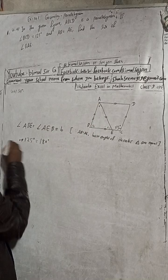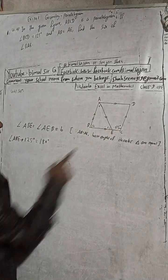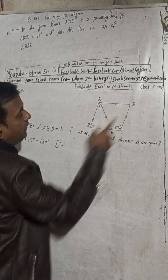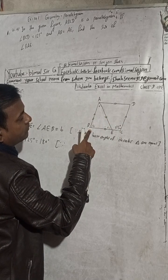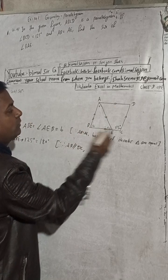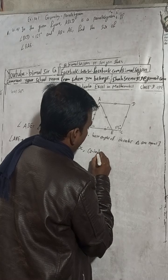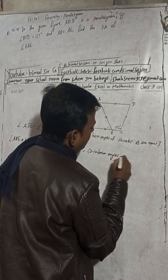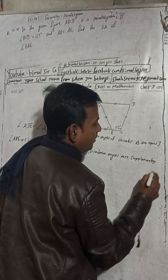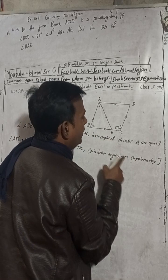I will write the full name: angle ABE plus angle BCD — this angle plus this angle — is equal to 180 degrees. The reason is AB parallel DC is given, and that is why these two angles are co-interior angles. Co-interior angles are supplementary, meaning their sum is 180 degrees.